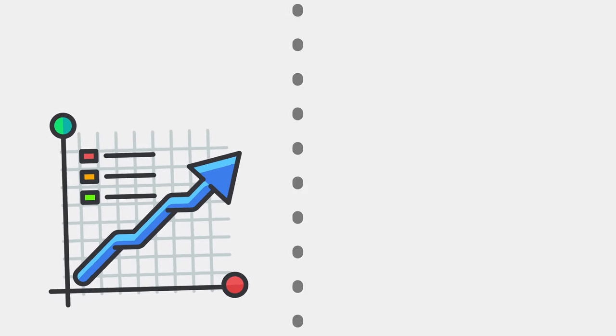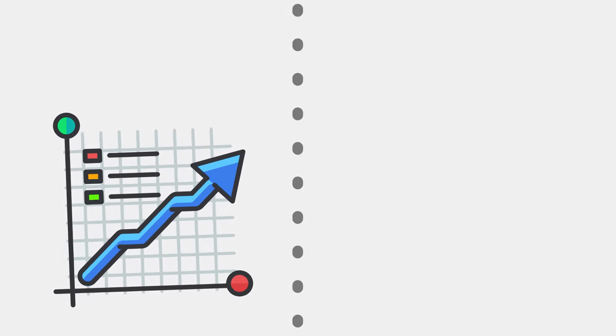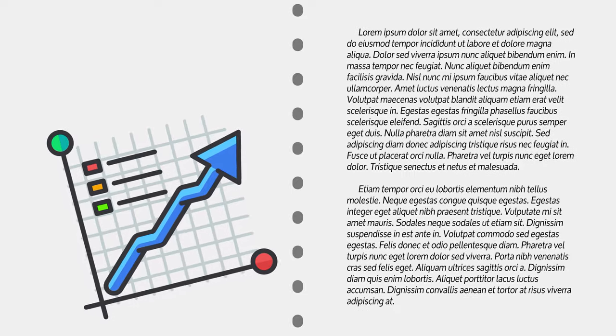Balance your report layout by using columns. Part of the key to creating an effective annual report is finding a good balance between text and images. Drawing an invisible line down the middle of your page is an easy way to guide your design — put your chart or photo on one side and text on the other, and voila!